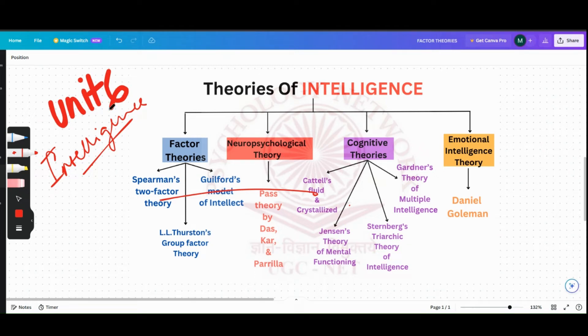Hello everyone, today we would be talking about Thurston's Group Factor Theory. But before that, I would just like to talk about the UGC NET syllabus a little bit. So in UGC NET syllabus, you would find intelligence in Unit Six: Thinking, Intelligence, and Creativity.